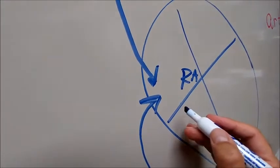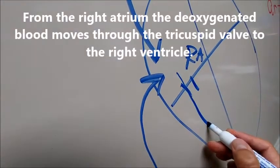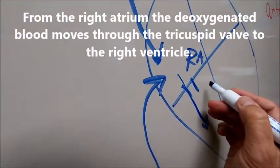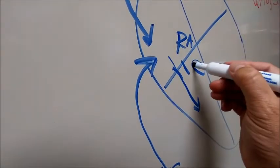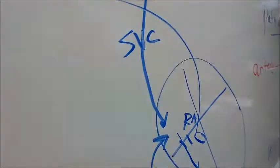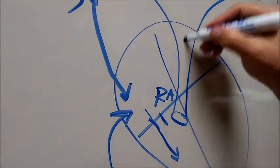Blood then goes through the tricuspid valve, so the blood kind of moves this direction right here. Then there is a semilunar valve that carries deoxygenated blood to the lungs. Let's try that.